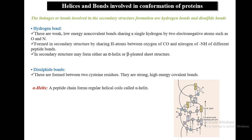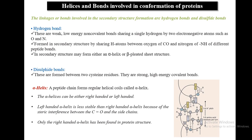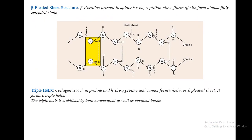In the alpha helix, a peptide chain forms a regular helical coil with a pitch of 5.4 Ångströms and 3.6 amino acid residues per turn. The alpha helix can be right-handed or left-handed; the left-handed alpha helix is less stable than the right-handed due to steric interference between carbonyl groups and side chains — only the right-handed alpha helix has been found in protein structures. The beta-pleated sheet: beta-keratin is present in spider's web, tortoiseshell, claw, and silk fibers, which form an almost fully extended chain.